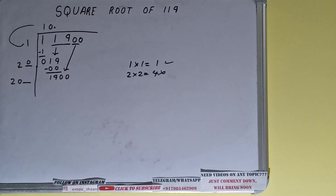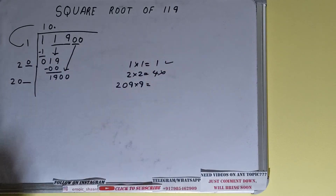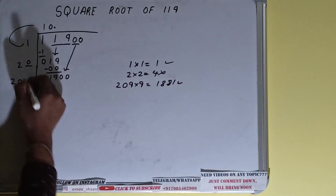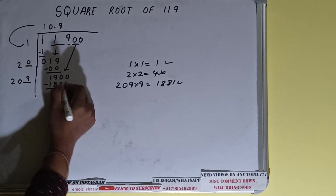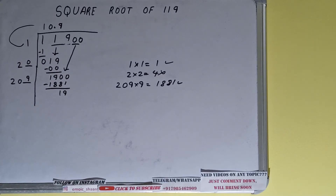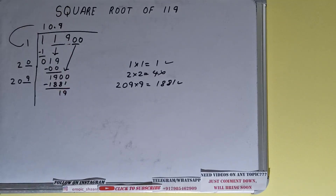The number becomes 1900. We can try 9: 209 times 9 gives 1881, which works. So we write 9 in the quotient and 9 in the divisor. 1881 subtracted from 1900 leaves 19. Now 209 plus 9 equals 218, and we keep one extra digit space.